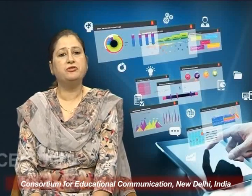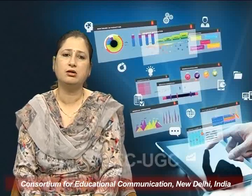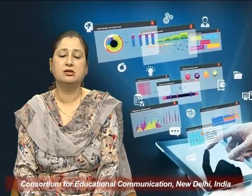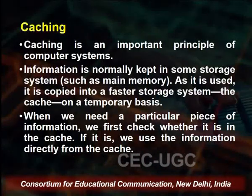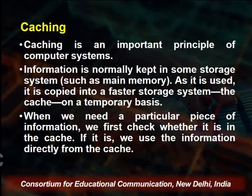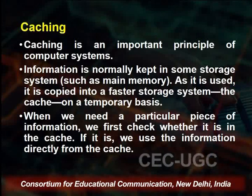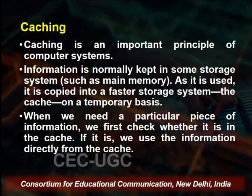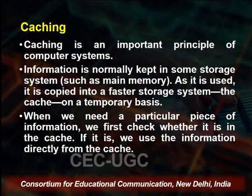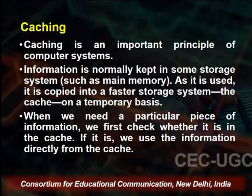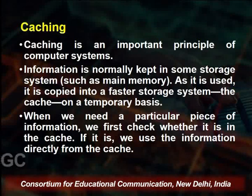When we talk about different types of memories, an important concept requiring attention is caching. It is a very important principle in computer systems. The CPU is the fastest device in the system, whereas main memory is much lesser in speed compared to the CPU. Secondary memory is further slower. When the CPU is executing processes it needs data at a very fast pace, which is generally not met even by RAM.